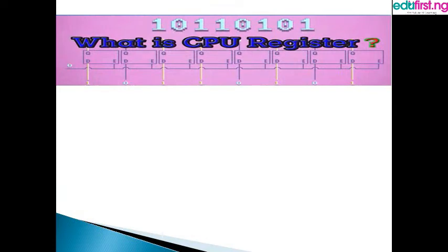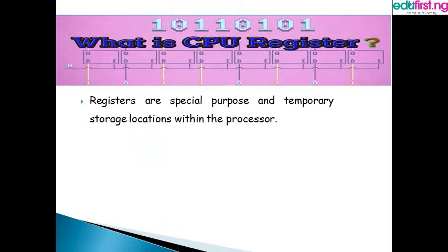The third component of the CPU is the register. Registers can be defined as special-purpose and temporary storage locations within the processor. The register is a kind of storage system located inside the processor itself. Other storage devices such as secondary storage can be anywhere in the computer, and the main memory — RAM and ROM — are on the motherboard, but registers are located directly in the processor.